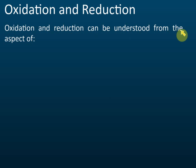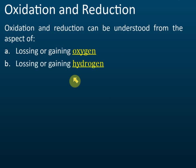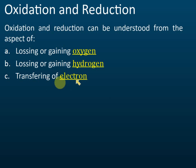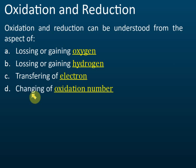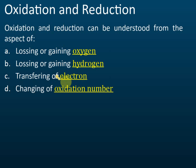Oxidation and reduction can be understood from four aspects: gaining or losing oxygens, gaining or losing hydrogens, transferring electrons, and changing oxidation numbers. Out of these four, methods C and D — electron transfer and oxidation number change — can be used to identify oxidation and reduction for all types of reactions, while A and B only apply to certain reactions.